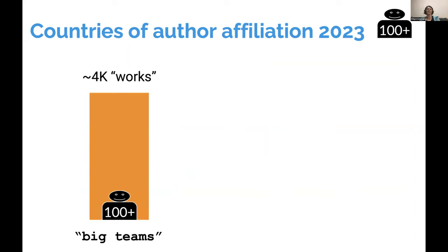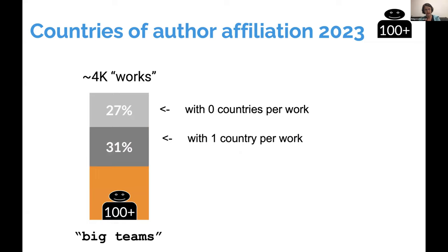Looking at country metadata in the records, 27% of records have no country information, and 31% have only one country per work. I'm not sure whether both numbers mean everybody is from the same country, or whether country information is missing for all authors except perhaps the first. Still, almost half of records appear to have more than one country in their affiliation metadata fields.